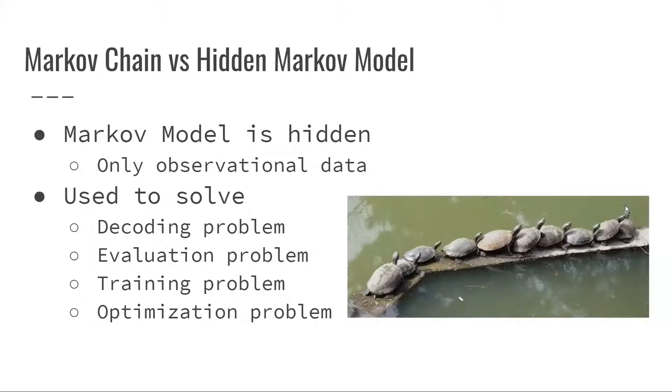The difference between a Markov chain and a hidden Markov model is that the hidden Markov model is hidden, which means only observational data is observed. For example, you won't need to have any of the transitional probabilities, and you would just need to figure out what's the probability of a certain event happening given the observational data. And the hidden Markov model is used to solve four different types of problems.